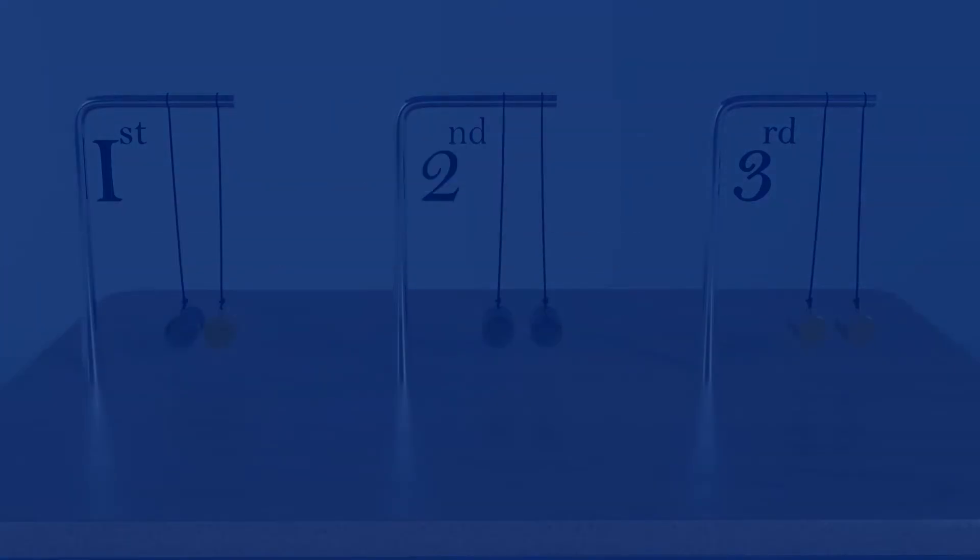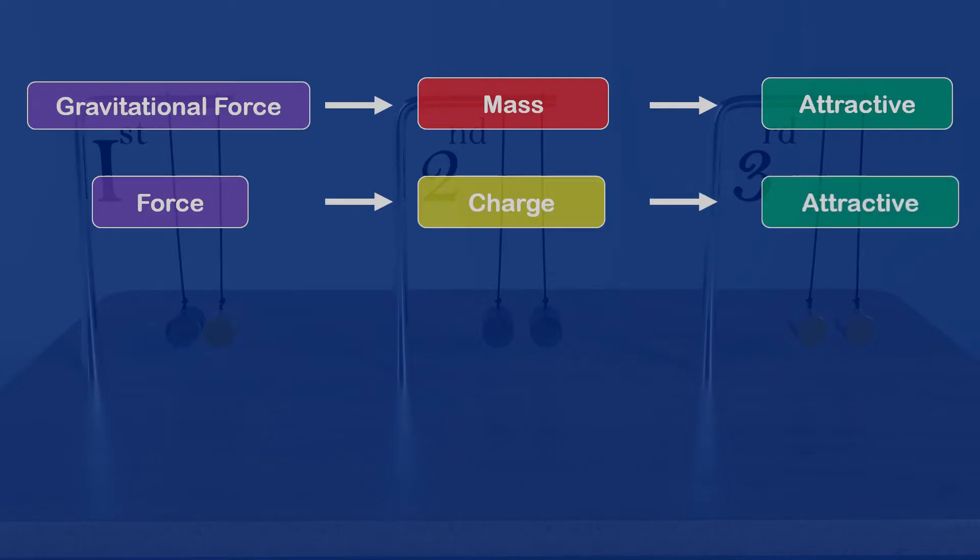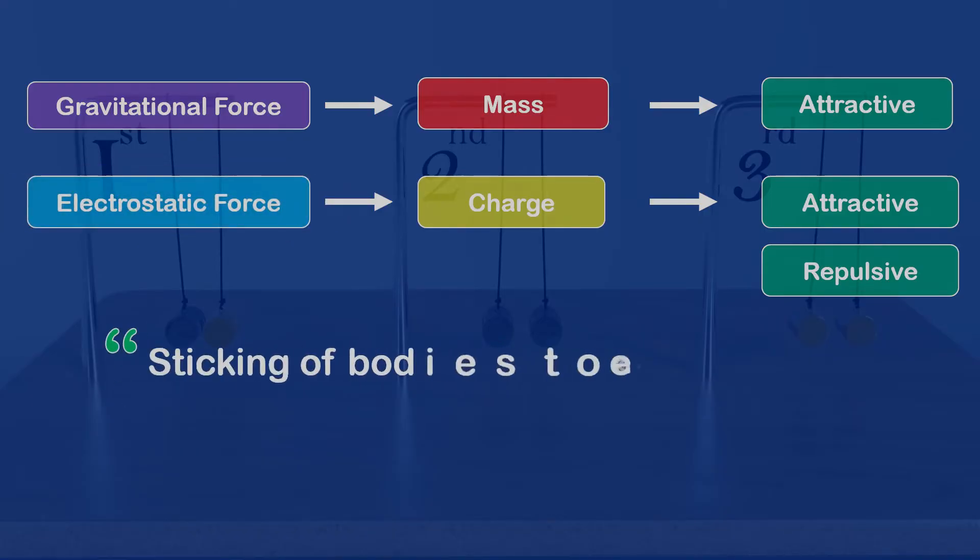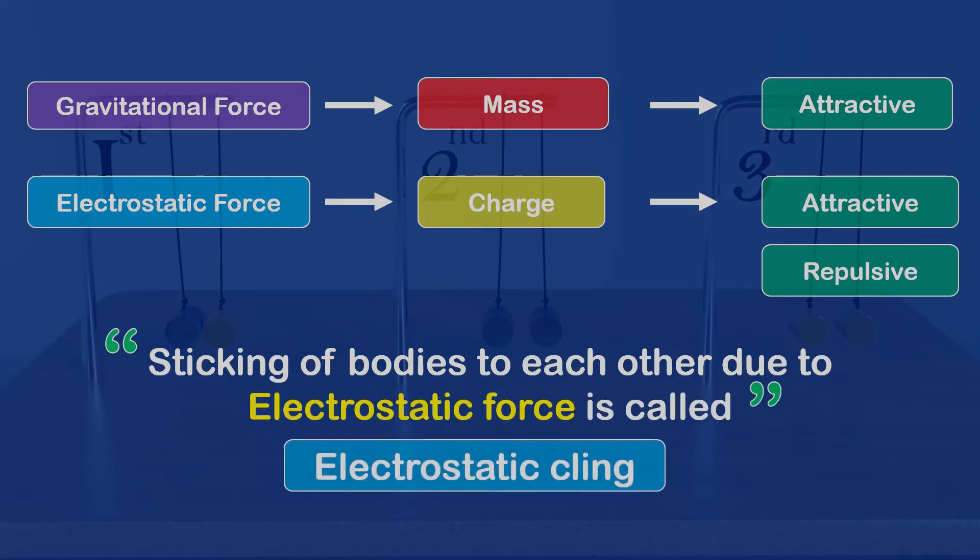The difference is that, the gravitational force due to the mass is always attractive, while the force due to the charged bodies can be attractive and repulsive also. This force between charged bodies is named electrostatic force. The sticking of bodies to each other due to electrostatic force is called electrostatic cling.